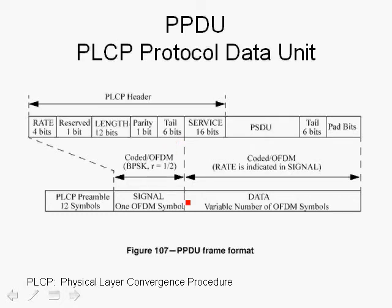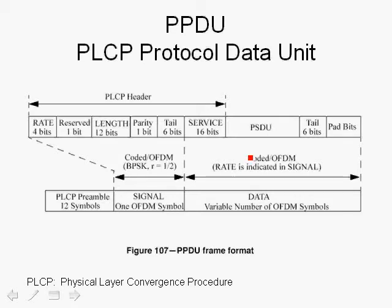Following the signal field are OFDM symbols. The OFDM symbols carry the coded bits, and the number of OFDM symbols depends on the length of the data. An important aspect of the modulation into OFDM symbols is that the total amount of data bits must translate into a multiple of the number of coded bits per symbol. If it does not, you have to add pad bits — which are zeros — to make them a multiple.